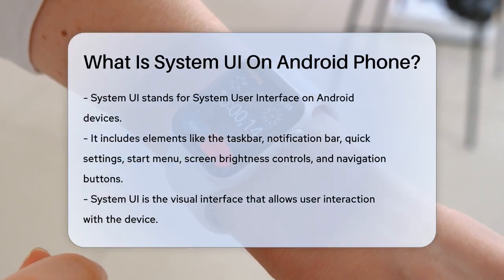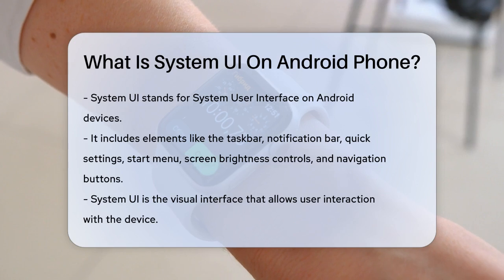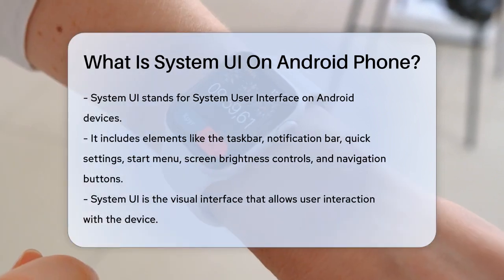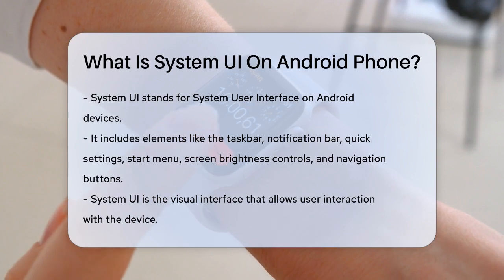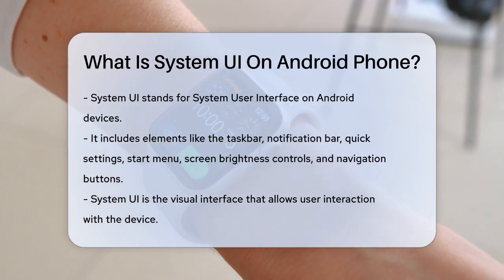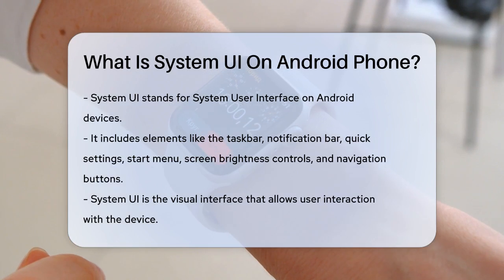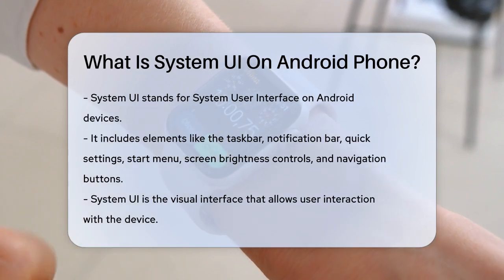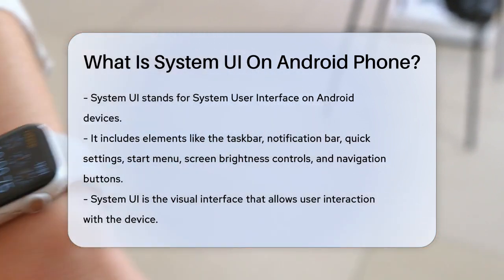System UI, or System User Interface, is essentially everything you see on your Android device that is not an app. This includes the taskbar, notification bar, quick settings, start menu, screen brightness controls, and even the navigation buttons. It's the face of your phone, making it easy for you to interact with your device.